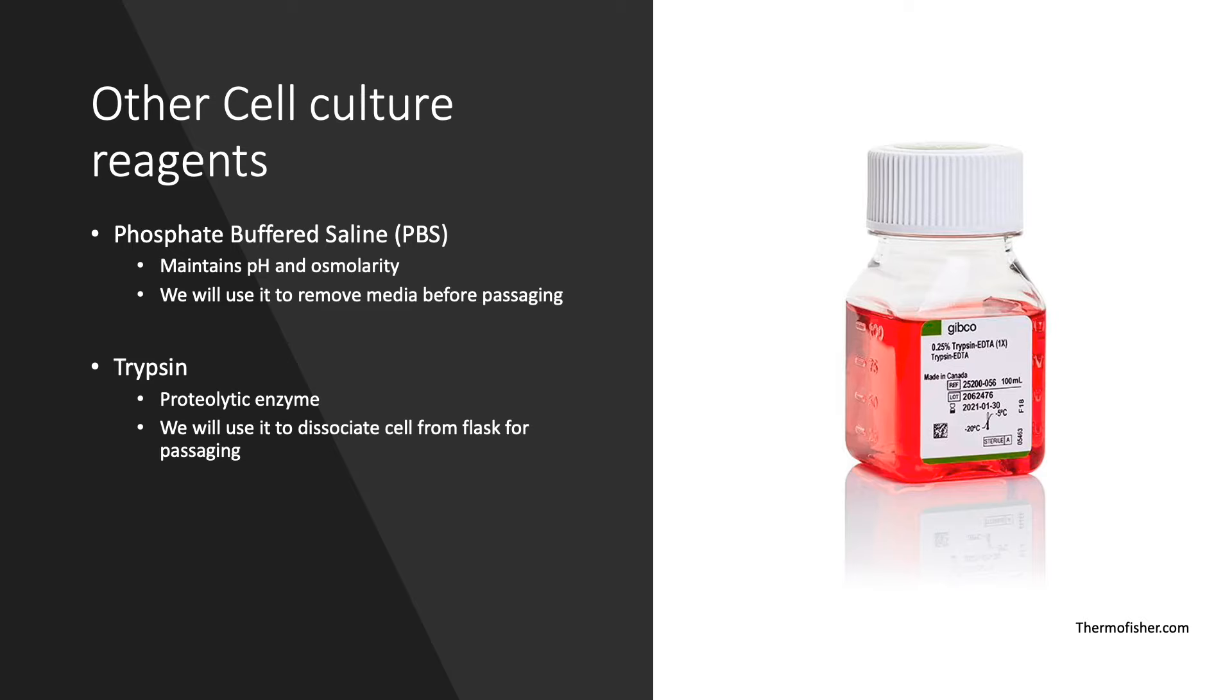Trypsin is a proteolytic enzyme, also known as a protease. Its function in cell culture is to break down proteins that help adherent cells attached to the surface of the flask. Most trypsin solutions for cell culture also contain EDTA, which is a chelating agent that helps remove calcium and magnesium in order to enhance cell dissociation.